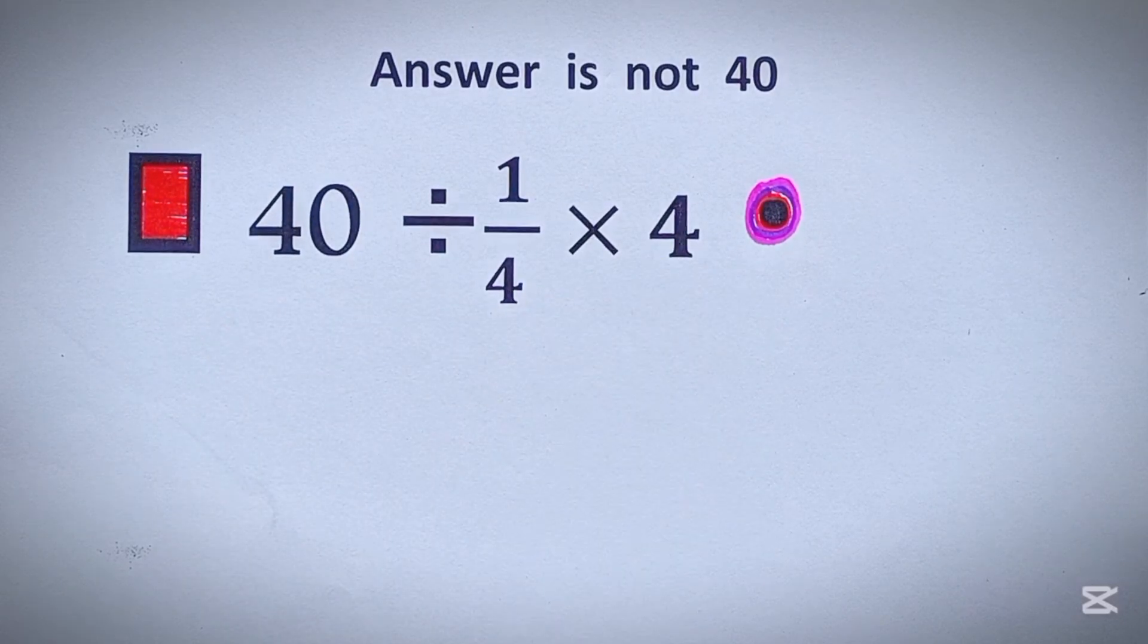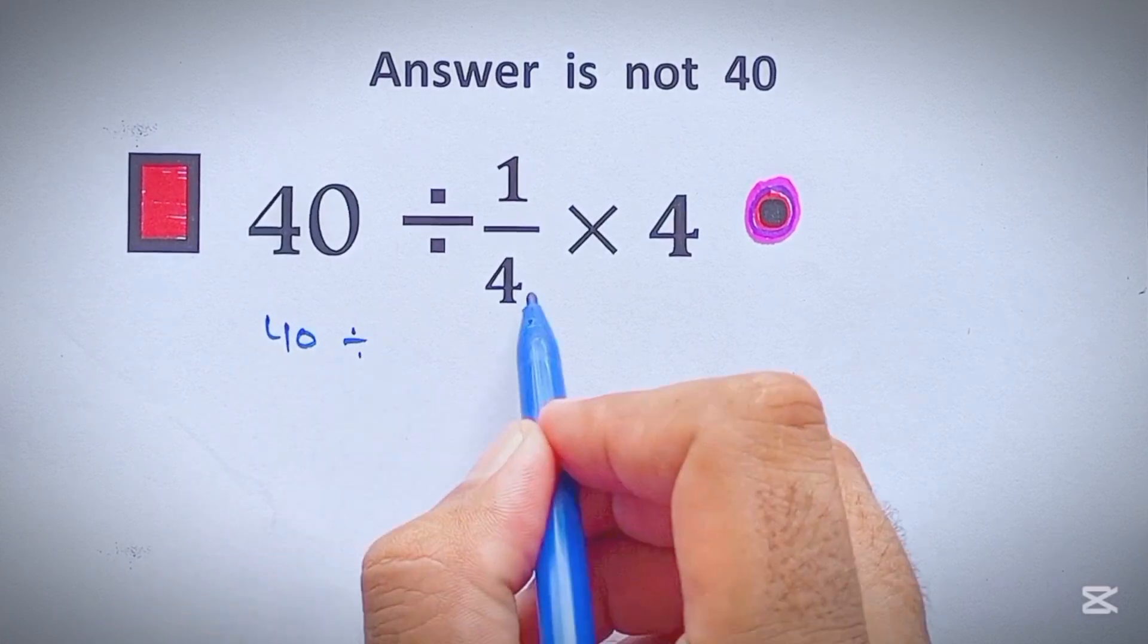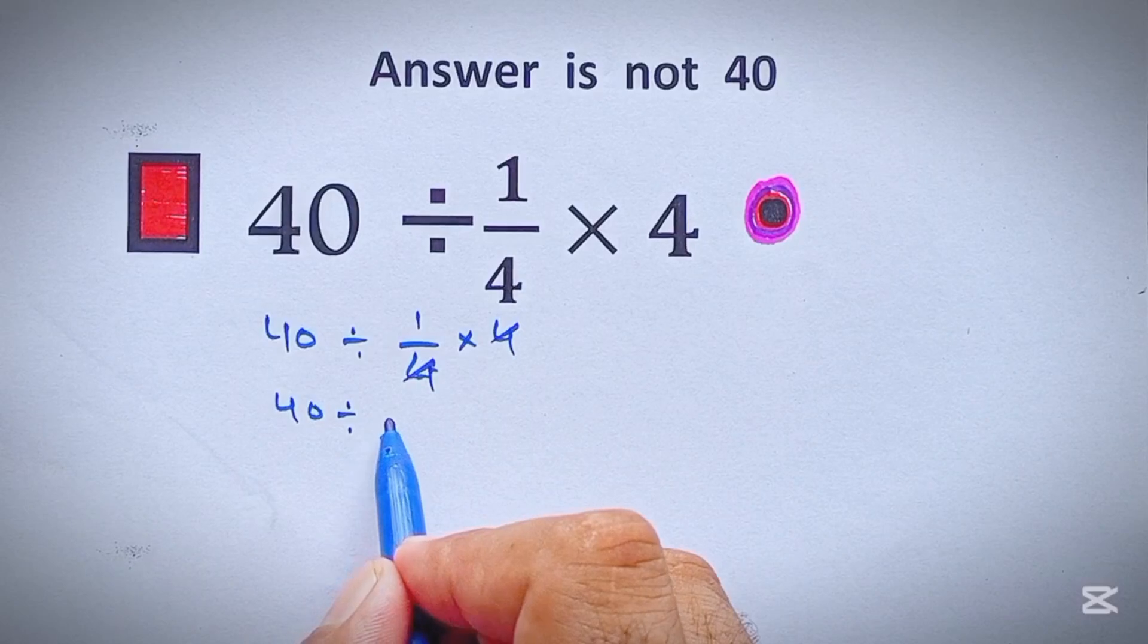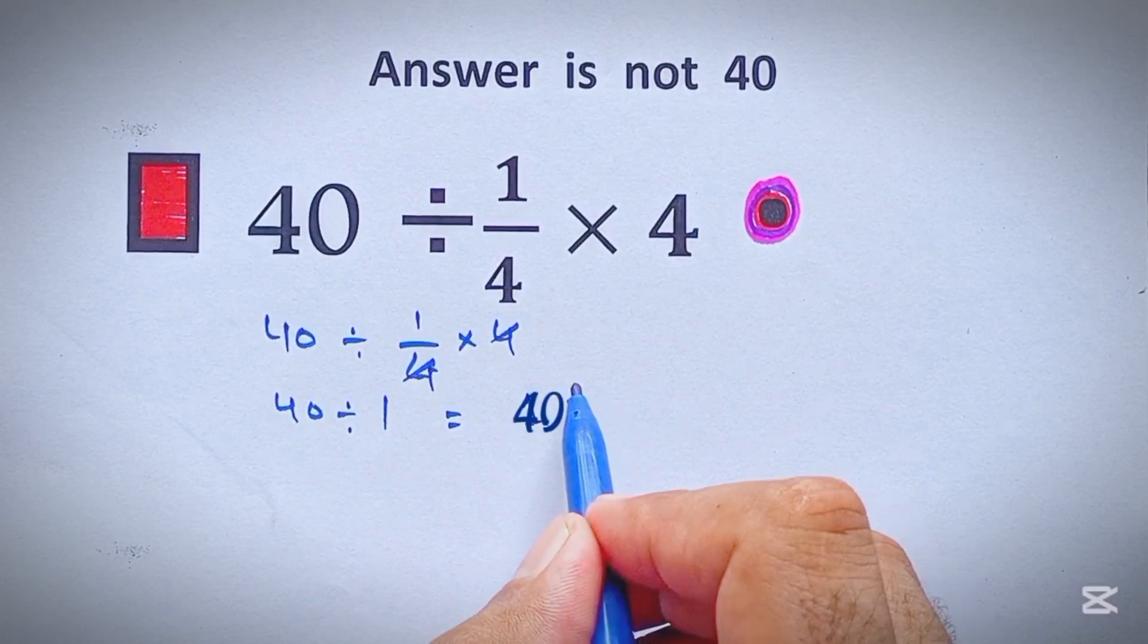Let's begin as most people do. They first start with canceling these both 4s with each other, and 40 divided by 1 which equals to 40. But this practice is wrong.